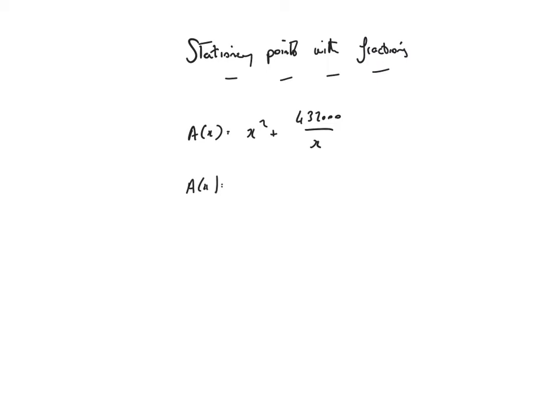My first move is I need to prepare to differentiate. x squared is good to go. I'm going to bring that up and that will be 432,000 x to the minus 1.